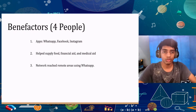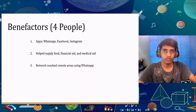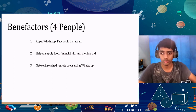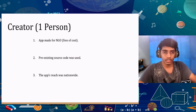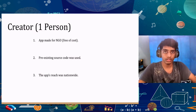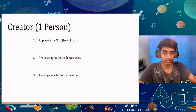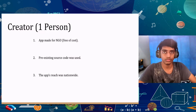Most benefactors used WhatsApp, Facebook, and Instagram. They helped in supplying food, financial aid, and medical aid. WhatsApp enabled benefactors to reach even remote areas. Finally, regarding the creator — the creator we interviewed made an app for an NGO free of cost, using a pre-existing source code, meaning there were apps even before the pandemic used in disaster relief. The app was available nationwide with around 750 users.